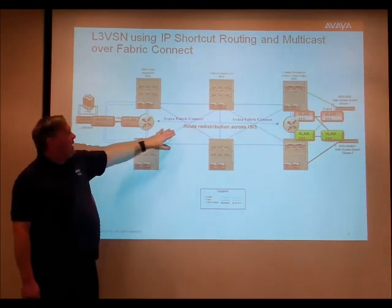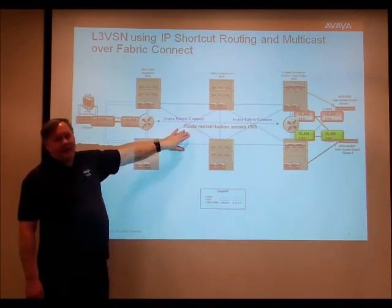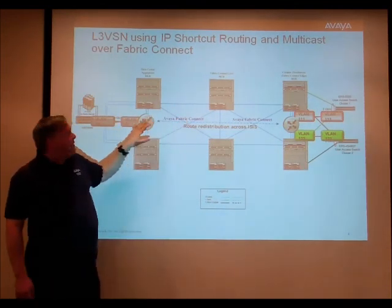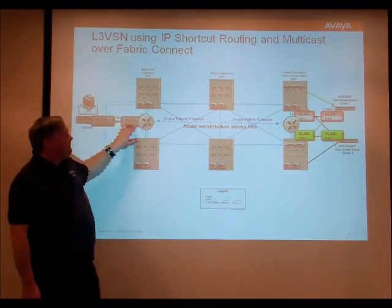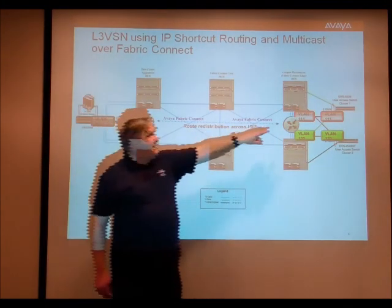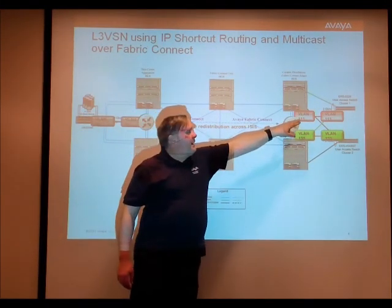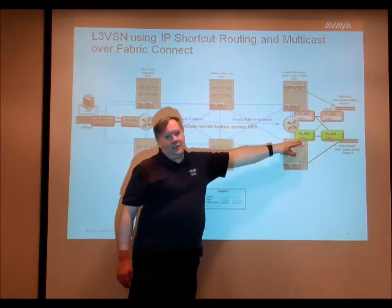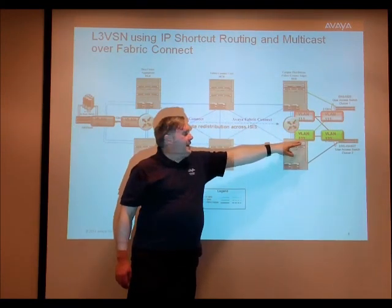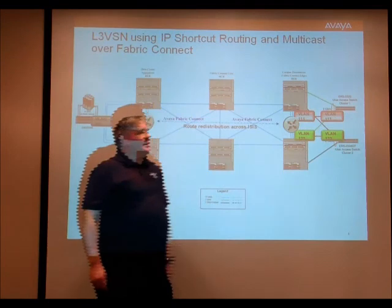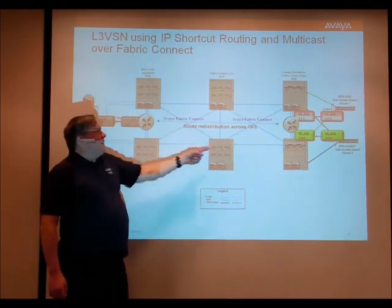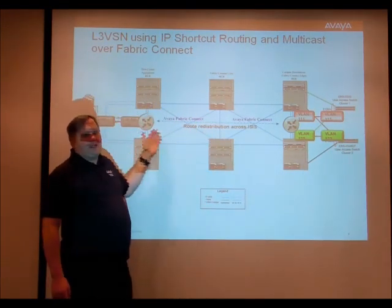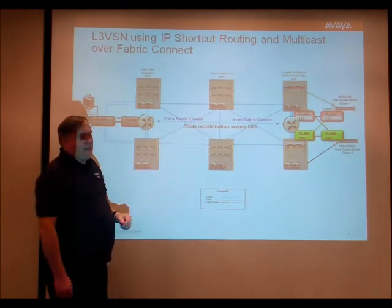But in my environment, I'm just using ISIS to load all my direct connect routes. Here I have VLAN 99. Over here I have VLAN 111 in one of my user access switch clusters, and VLAN 123 in the other user access switch cluster. And because I'm redistributing those routes, I'm able to get traffic across between any of these three VLANs.